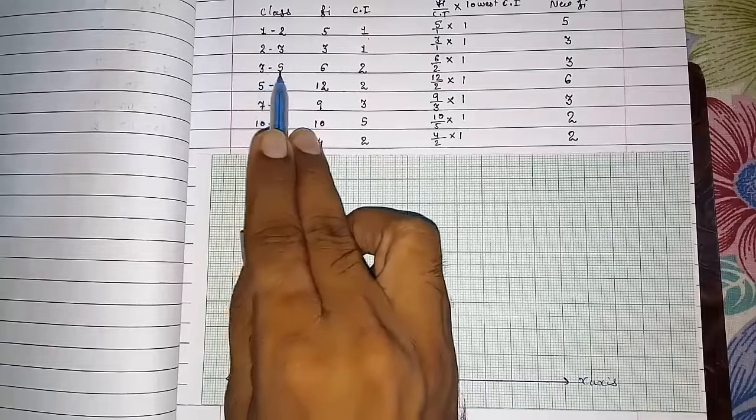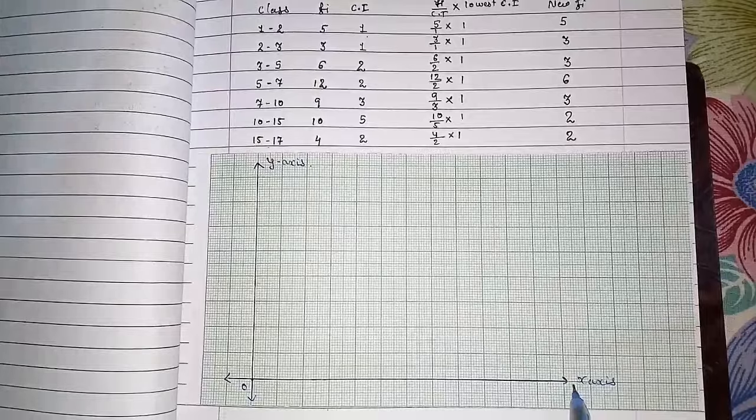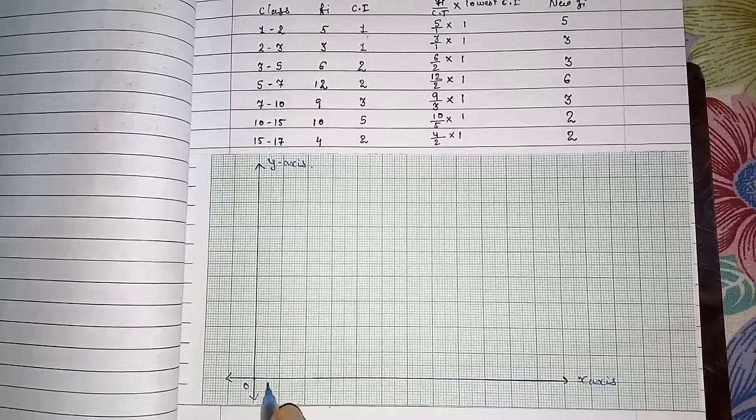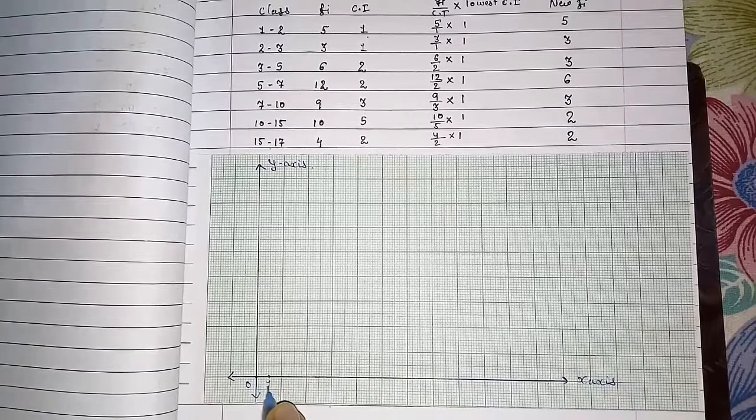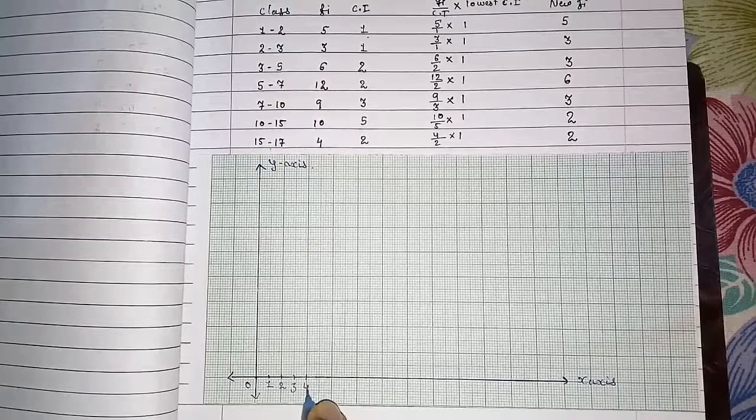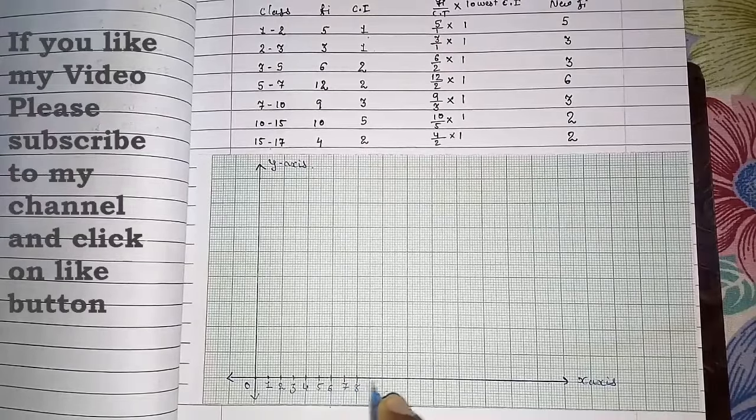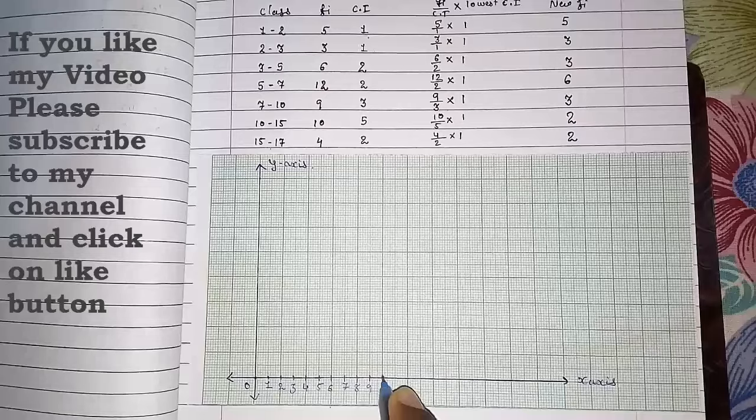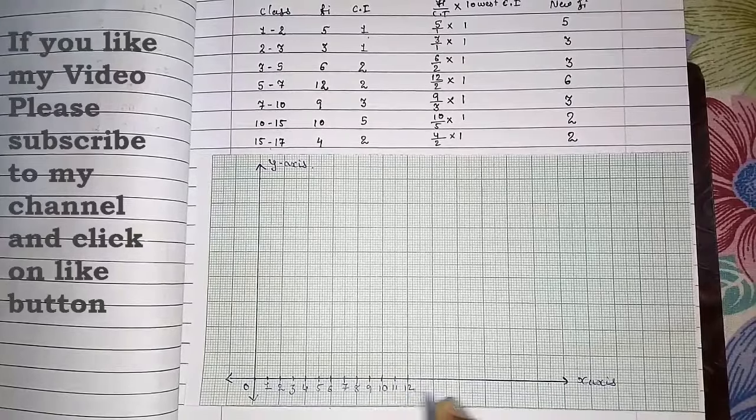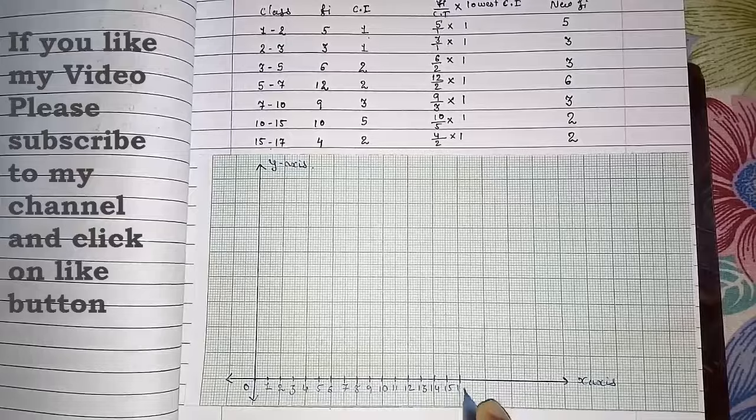This is the format that we are generally using: class on x-axis and frequency on y-axis. We know the classes are 1, 2, 3, but we have to see the lowest gap is 1. So we have to take the distribution of 1 only, but here the data are very big. So I am drawing it by taking 5 small boxes as 1, then 5 boxes as 2, then here 3, then 4, 5, 6, 7, 8, 9, 10, and up to 17 we have to take 11, 12, 13, 14, 15, 16, and 17.